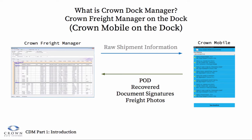Crown Dock Manager works in a similar fashion to Crown Mobile. One can think of Dock Manager as Crown Mobile on the dock, where it takes raw shipment information from the main Crown Freight Manager system, sends that out to drivers on the road, and drivers return back updated information like PODs, pickup and recovery times, document signatures, and freight photos.